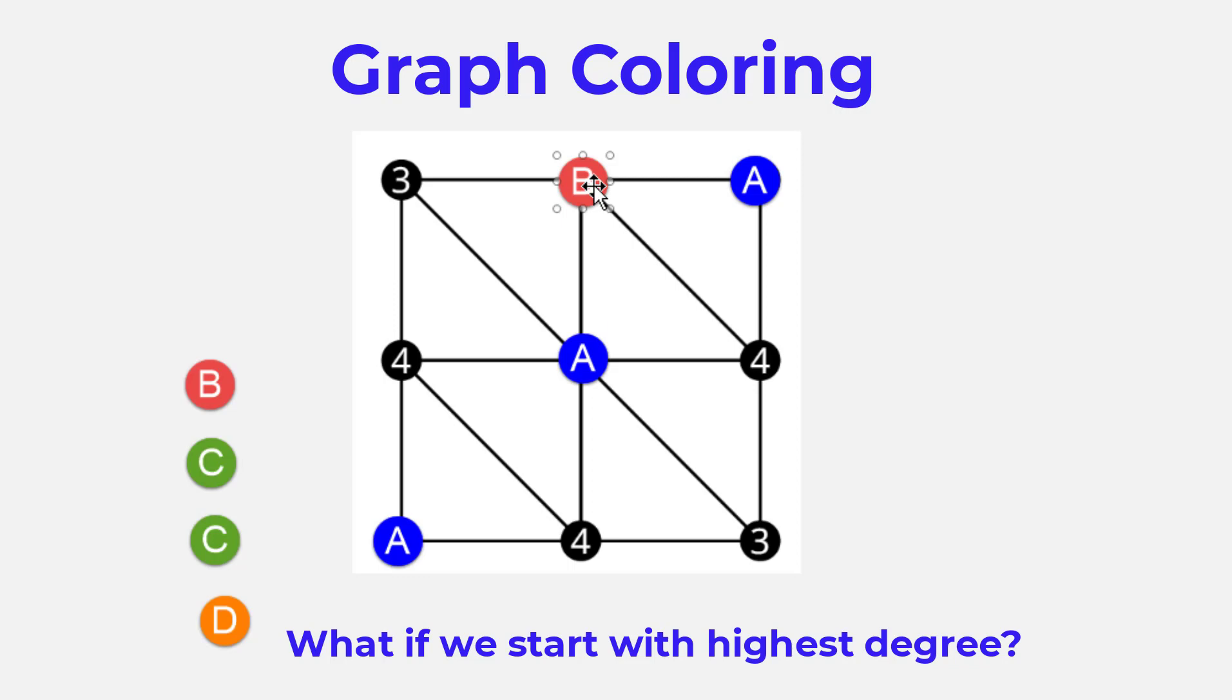If I place that one as being red, then I cannot place the one on the right as being red. I could either do the one on the left or the one on the bottom of the screen. Either way, let's say that I choose the one on the left.